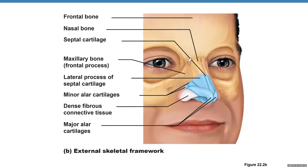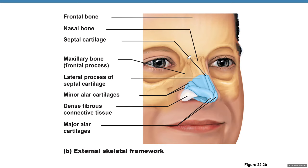The nose is made of bones — the frontal bone and nasal bones — along with cartilage. The ala itself is made partially of cartilage and partially of dense fibrous connective tissue.